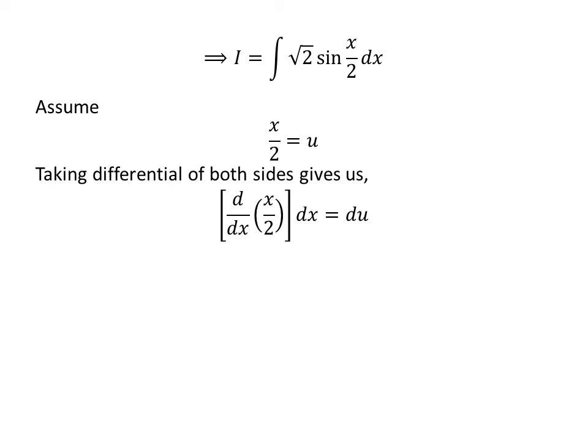Taking the differential of both sides, we get the derivative of x over 2 with respect to x, times dx, equals du. As we know, the derivative of x over 2 with respect to x is equal to one-half, so we have one-half times dx equals du.